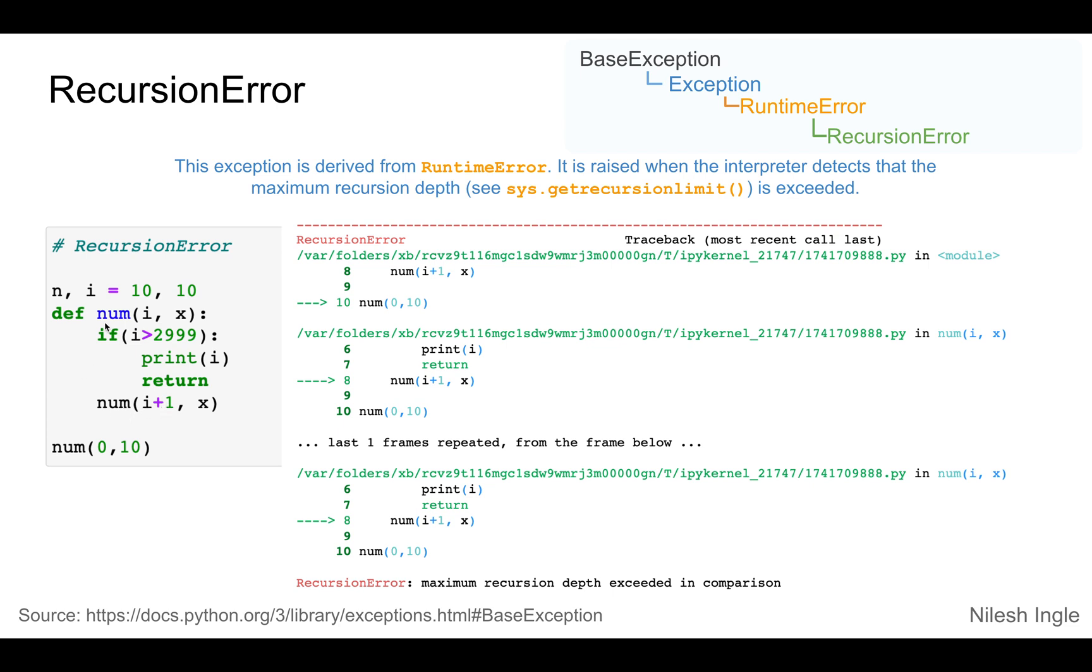When we are calling the same function again, and when we call the num function with input value of i equal to 0, x equal to 10, that's going to raise an error. You can only recurse so many times, and it does it for up to 2999. If you go beyond that, it will throw this error, which is a recursion error.